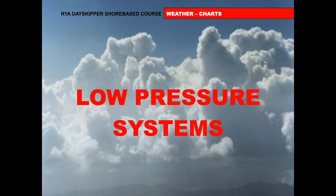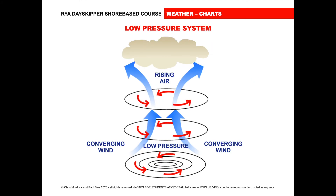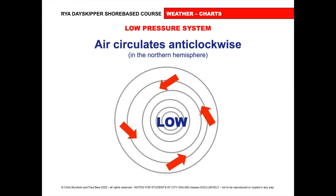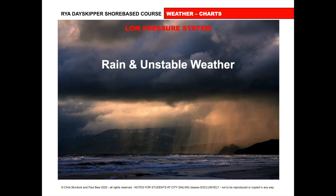Now let's talk about low pressure systems. In a low pressure system the air is going up — like a bonfire in the middle. At the base level the air is converging, flowing anti-clockwise and rising, producing clouds at the top. At the base level the air flows inward at about 20 degrees to the isobars, giving rain and unstable weather.